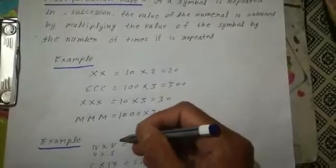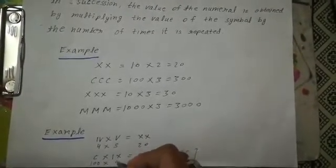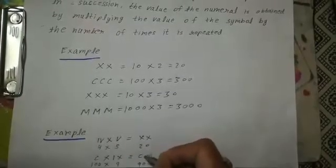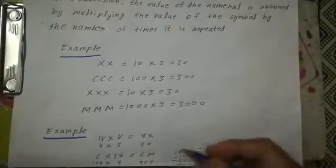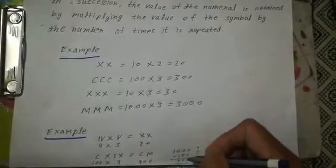Now another example: if Roman symbols are multiplied and the product also needs to be expressed in Roman symbols. IV equals 4 (5 minus 1). IV multiplied by V (5): 4 into 5 equals 20, which is XX. C multiplied by IX: C is 100, IX is 9 (10 minus 1), so 100 into 9 equals 900, which is CM. CM: M is 1000, C is 100, so 1000 minus 100 equals 900.